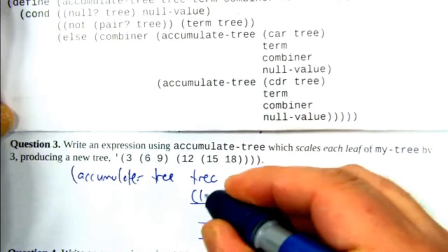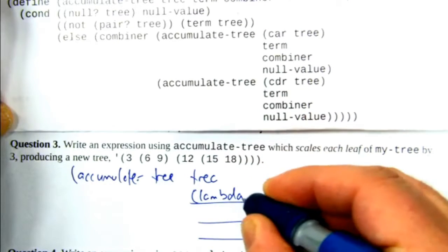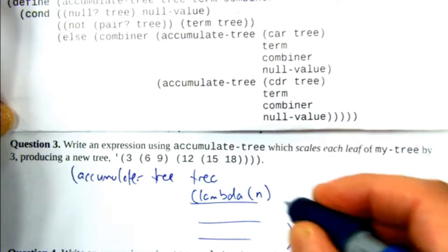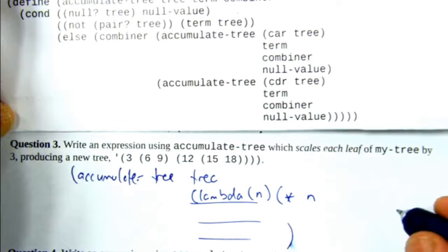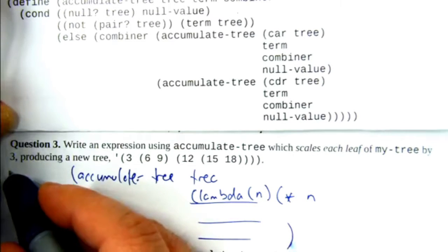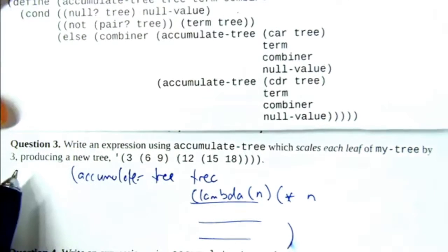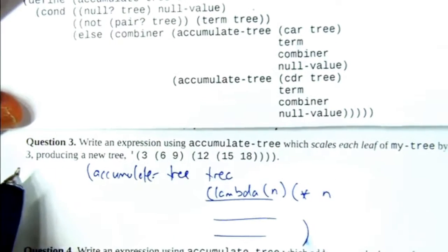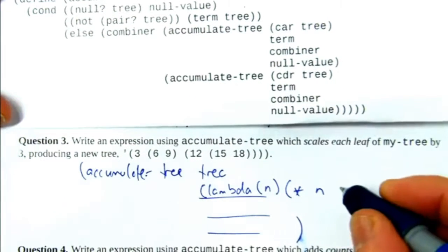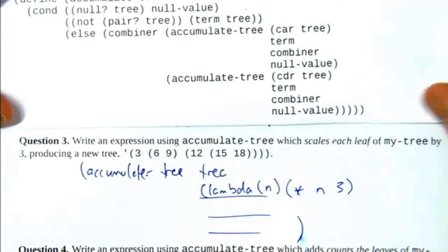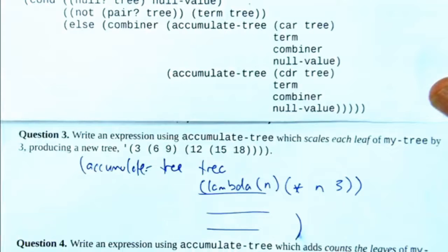So it's a lambda function that accepts a number and then multiplies that number by, in this case it's just a fixed value, three. We didn't parametrize the scalar. That could be a parameter, but in this case it's not. So we make that lambda function and hand it in. So that's a function that does the scaling.